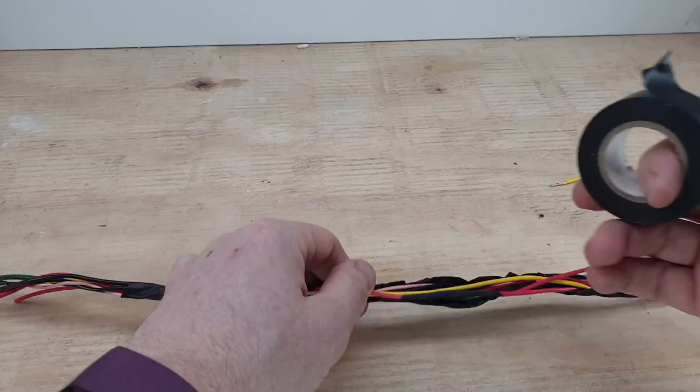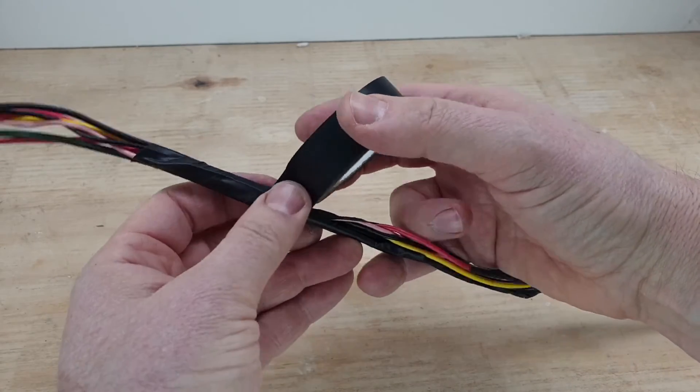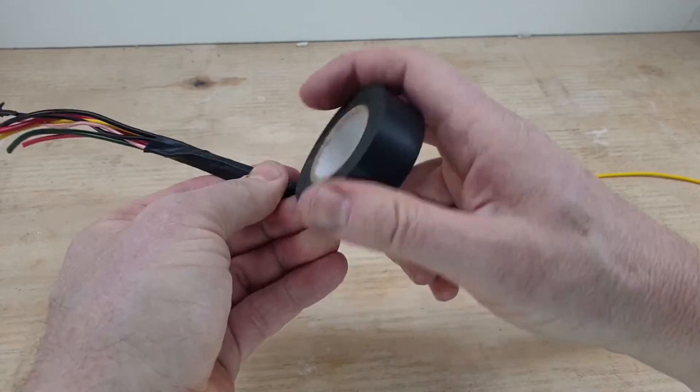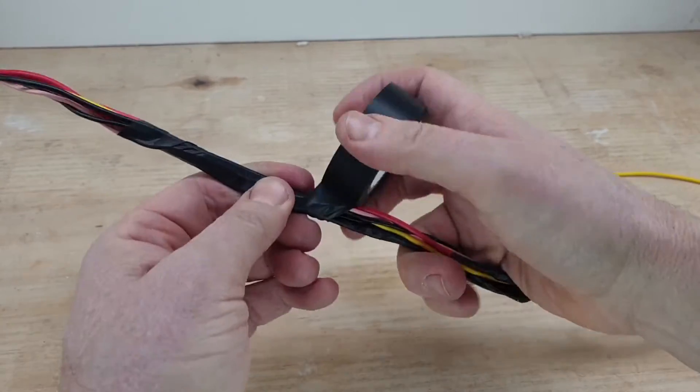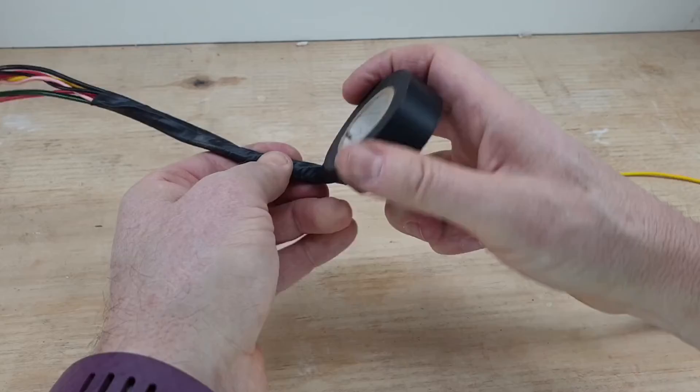So now we can tape this loom up. Start at the top. This is where we cut, so we want to go a little bit above that. And again, just let the tape find its pattern. A little bit of tension over it. I'm holding it with my right hand, keeping them bunched together.